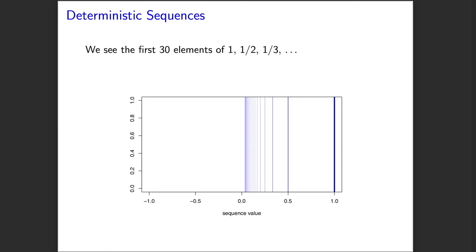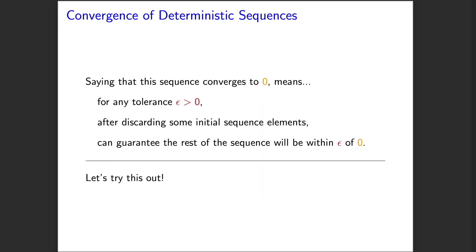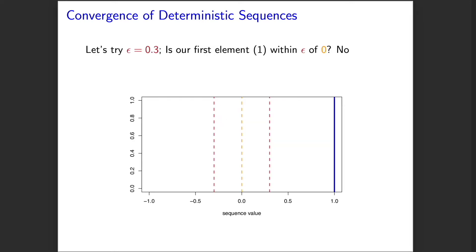I visualize the first 30 elements starting at one, going all the way down to one-thirtieth. We could keep going, and those bars would get closer and closer to zero. So what does it mean when we say this deterministic sequence converges to zero? It means that for any tolerance epsilon — a number greater than zero — we can look at our sequence, and if we discard some number of initial elements (that number depending on epsilon), we can guarantee the rest of the sequence will be within that tolerance of zero. Let's visually try this out.